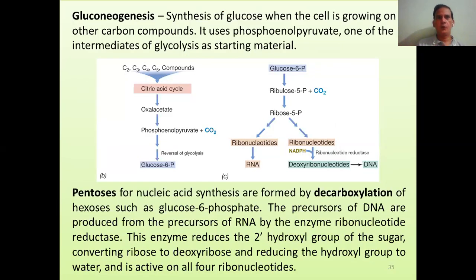Another process is gluconeogenesis — the synthesis of glucose when the cell is growing on other carbon compounds. If glucose is available, it doesn't need to synthesize glucose; but if glucose is not available, then it needs to synthesize it. One of the most common starting materials is phosphoenolpyruvate, an intermediate of glycolysis. A variety of molecules — C2, C3, C4, or C5 compounds — can enter the citric acid cycle, leading to formation of oxaloacetate, and then ultimately phosphoenolpyruvate, which converts to glucose-6-phosphate after a few reactions.